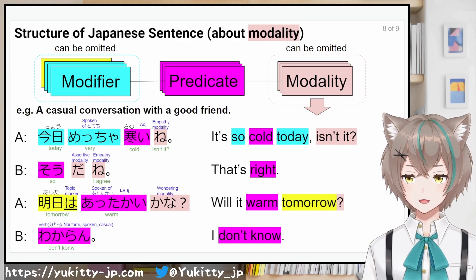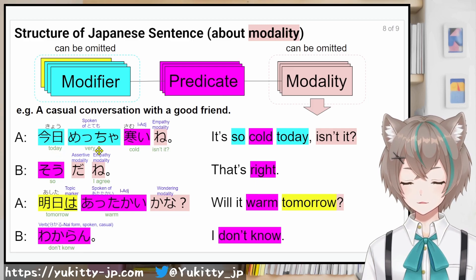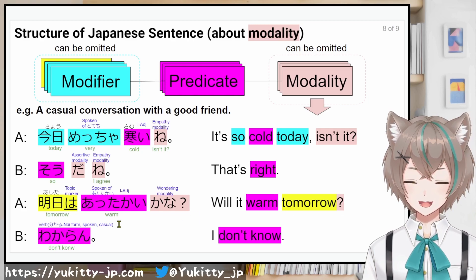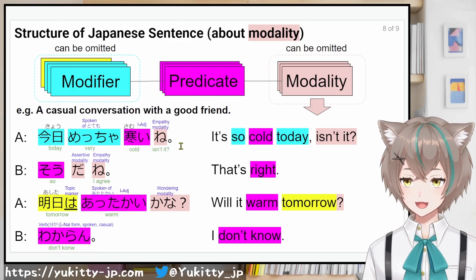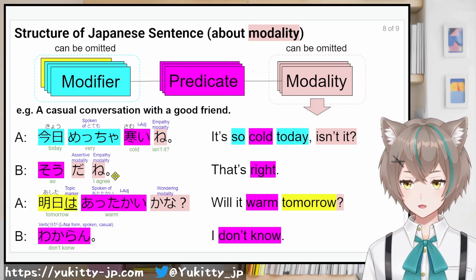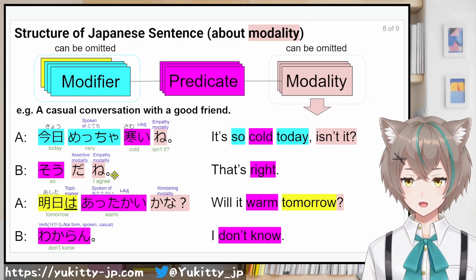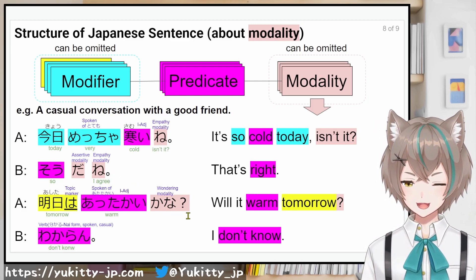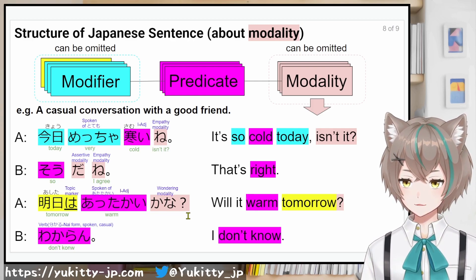Modalities are used a lot, especially in everyday conversation like this: 今日めっちゃ寒いね — ね here is an empathy modality meant to encourage the listener to agree. そうだね — そうだ implies agreement, and ね is also empathy modality. 明日はあったかいかな — かな is a wondering modality; it can be a question or a soliloquy. わからん.